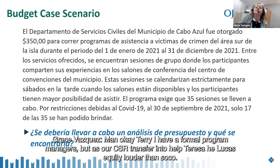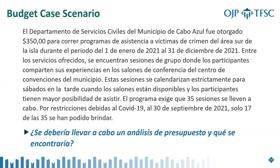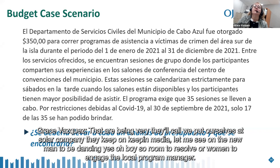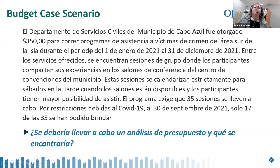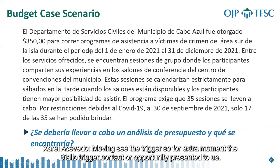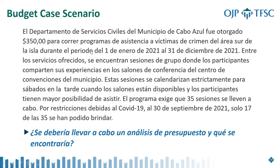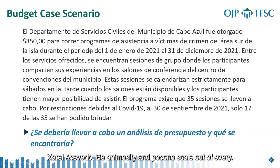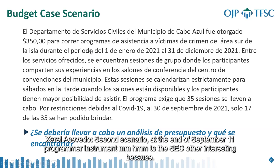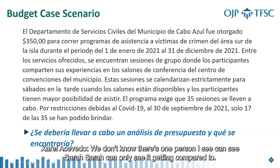One participant responded that the first step would be to verify whether there are separate funds for training activities, noting that for the Department of Justice, those funds require prior authorization. If activities are going to be held remotely and that doesn't incur costs for the institution, then the savings should be tallied and authorization requested to redirect those funds to other purposes. It would also be important to speak with the Program Manager to know what transfers are authorized and what new uses have been discussed. Equipment purchases to enable remote training were also authorized due to COVID, but that must be discussed with the Program Manager.